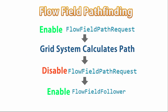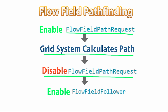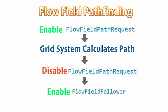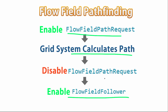So here's the general logic: when we tell a unit to go somewhere we enable the FlowFieldPathRequest component. Then when that one is enabled, our grid system has a query that looks for that component being enabled — it grabs the target position and calculates the path. Once the path has been calculated, it disables the request so it doesn't continue calculating the same path, and at the same time it enables the FlowFieldFollower so the actual unit follows the calculated path. Afterwards we're still going to expand upon this to handle multiple flow fields and optimize some things, but this is the core idea: we have a request, calculate the path, and then set the unit to follow that path. Let's go on to the next lecture and begin implementing this.